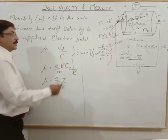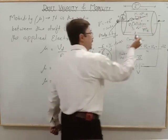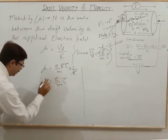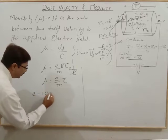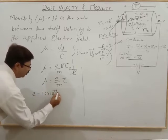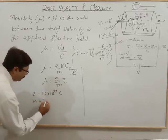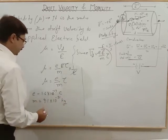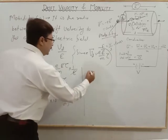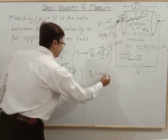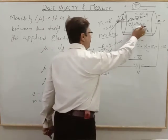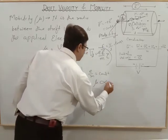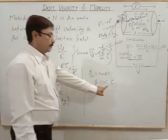Now, the charge of an electron e equals 1.6 × 10⁻¹⁹ coulombs and mass of the electron m_e is approximately 9.1 × 10⁻³¹ kg — both are constant. So e/m is constant, meaning mobility is directly proportional to the relaxation time τ. If relaxation time is large, the electron moves more freely and mobility is high; if collisions are frequent, relaxation time is small and mobility is low.